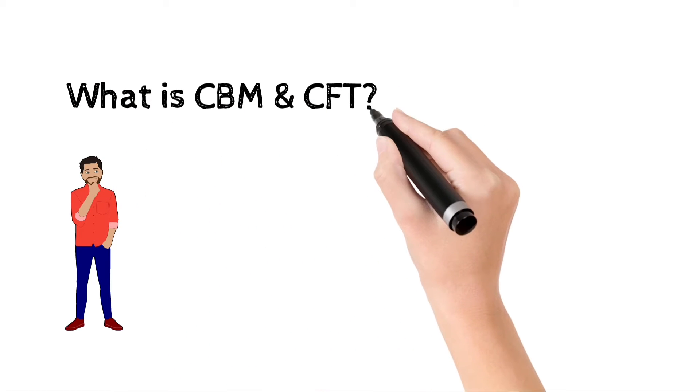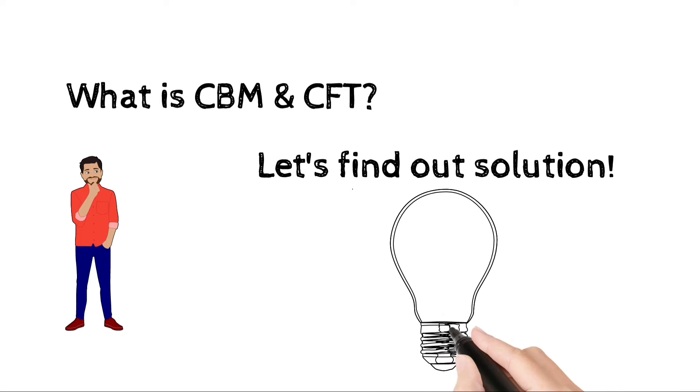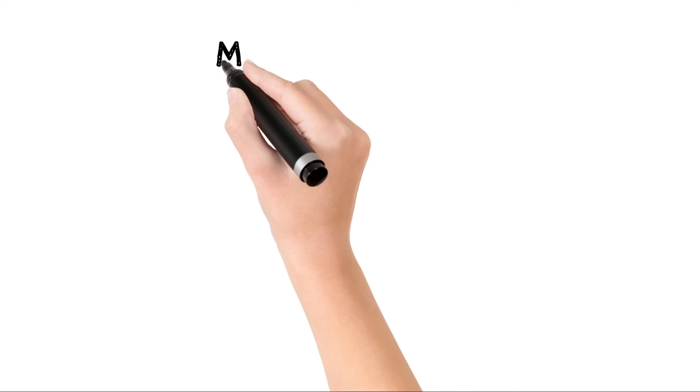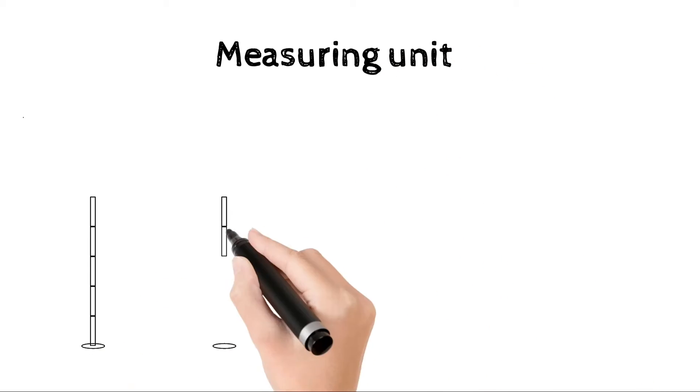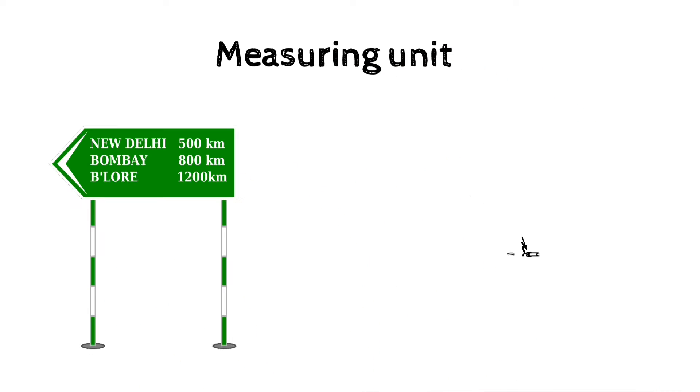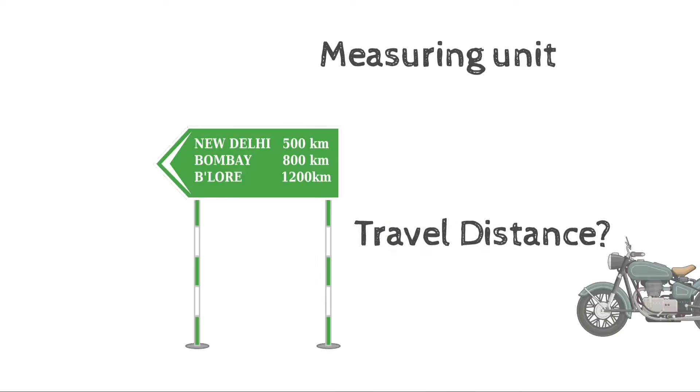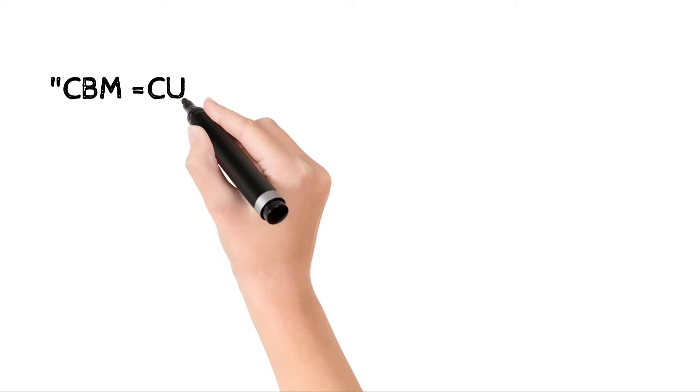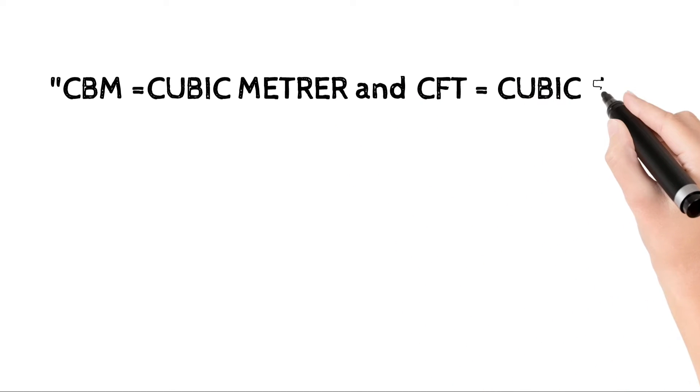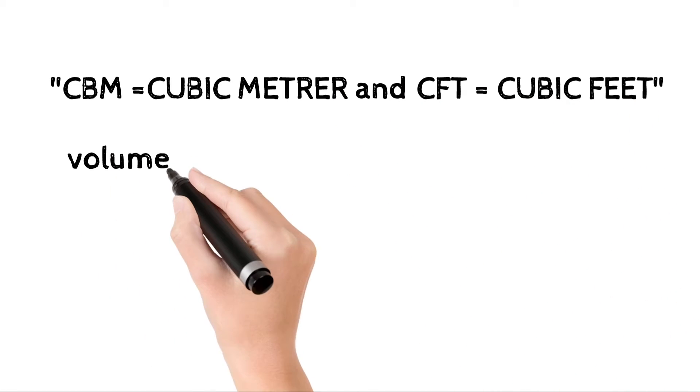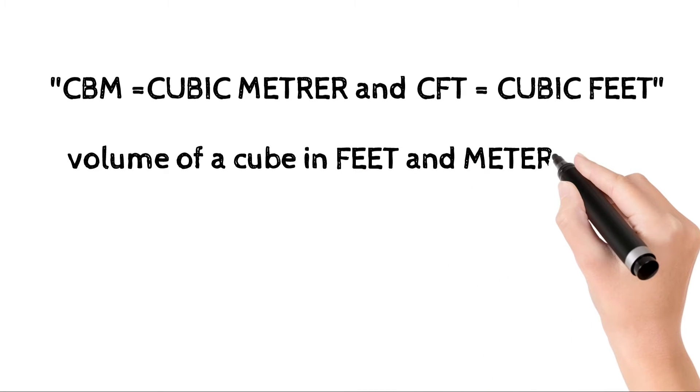First of all, it is just a measuring unit of volume. Like when we go for travel, we check how far that place is or the travel distance of that place. So CBM is cubic meter and CFT is cubic feet. CFT and CBM is volume of cube in feet and meter unit.